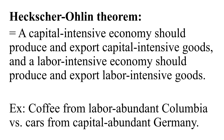For example, Colombia would be a labor-abundant economy and Germany would be a capital-abundant economy — the money, technology, know-how, and machinery would be more abundant in Germany since it's a more industrialized economy. According to the Heckscher-Ohlin theorem, German companies should produce more capital-intensive goods like cars, and Colombian companies should produce more labor-intensive goods — those requiring more labor than capital — such as coffee. And predictably, that's precisely what we're seeing today.